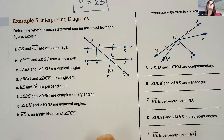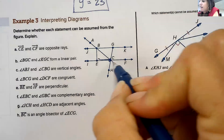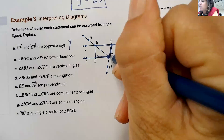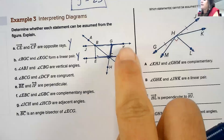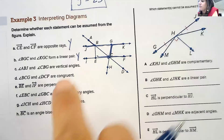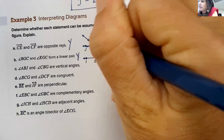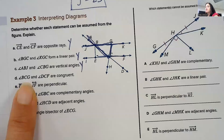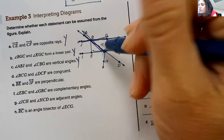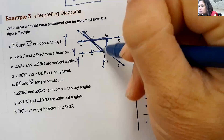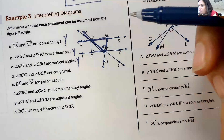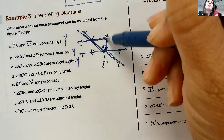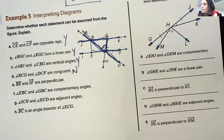We're going to put a Y next to ones we can assume and an N next to ones we can't. It says CE and CF are opposite rays — yes, that's opposite rays, that's a yes. Angles BGC and KGC — yes, we can assume those form a linear pair together. Can we assume angle ABJ is vertical to angle CBG? Yes, because the sides continue on and make an X shape — you can assume those are vertical angles. Can we assume angle BCG is congruent to angle DCF? They look congruent, but we cannot assume that because they're not vertical angles. This is not a straight line — so that one we cannot assume: no.